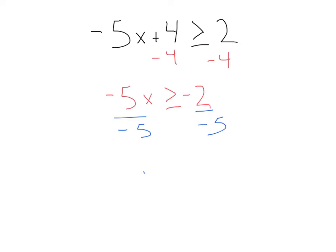That gives us x is, oh, we divided by a negative. What does that mean? That's right. Flip our sign. So instead of greater than or equal to, we'll have less than or equal to. And then we've got negative 2 over negative 5. We're just going to leave that as 2 fifths.